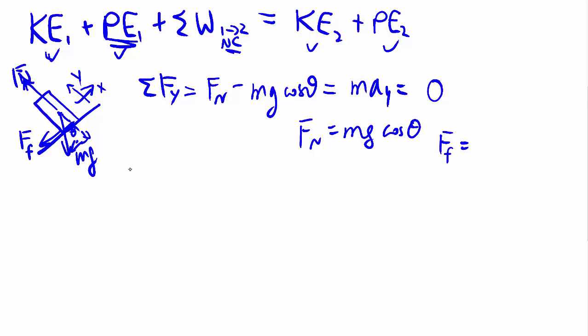Now knowing my Fn, I can work out that my friction force, or the size of it, is mu k times mg cosine theta. That's actually all I need in terms of forces.